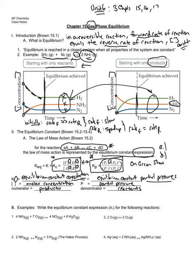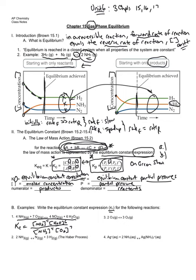Let's do the first example together. Write the equilibrium constant expression KC. KC equals — we put products on top, so the products are on the right side as written. NO2 is a product, so I put [NO2] raised to the 4th, times [H2O] to the 6th, divided by [NH3] to the 4th times [O2] to the 7th. That's how you write the expression — the formulas of products raised to their coefficients over the reactants raised to their coefficients. Go ahead now and do problems 2, 3, and 4.